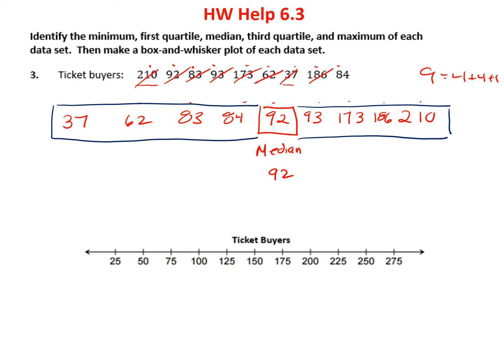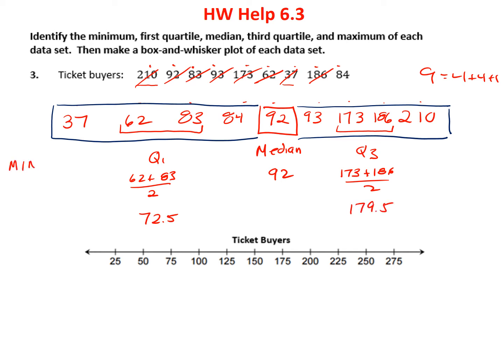My quartiles: I have 4 numbers on each side, so I'm going to have a middle 2. My quartile 1 is going to be 62 plus 83 divided by 2. So 62 plus 83 equals 145 divided by 2, which is 72.5. On the other side, quartile 3 is going to be 173 plus 186 divided by 2. So 173 plus 186 equals 359 divided by 2, which equals 179.5. My minimum is my smallest number and my maximum is my largest number.